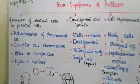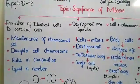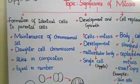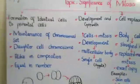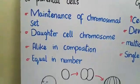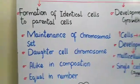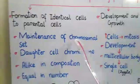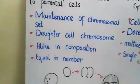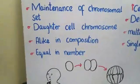The first significance is the formation of identical cells to the parent cells. Mitosis is a process in which a parent cell divides into two daughter cells. The daughter cells have an equal number of chromosomes as in the parent. The importance of mitosis is in the maintenance of the chromosomal set — each daughter cell receives chromosomes alike in composition and equal in number to the parent.